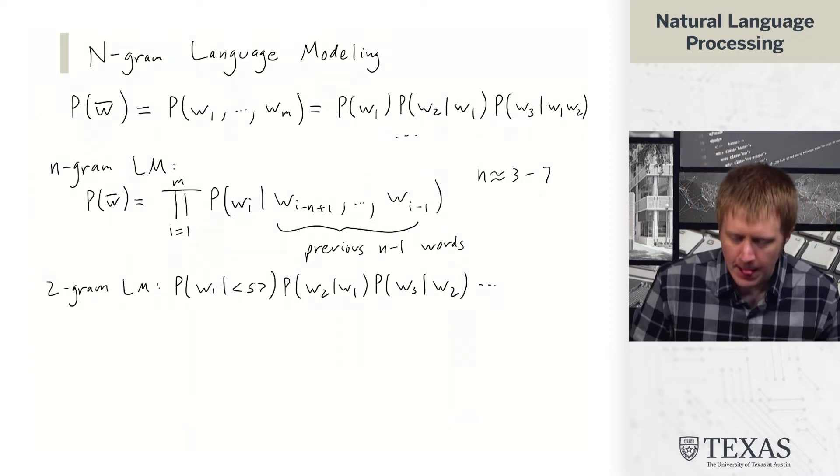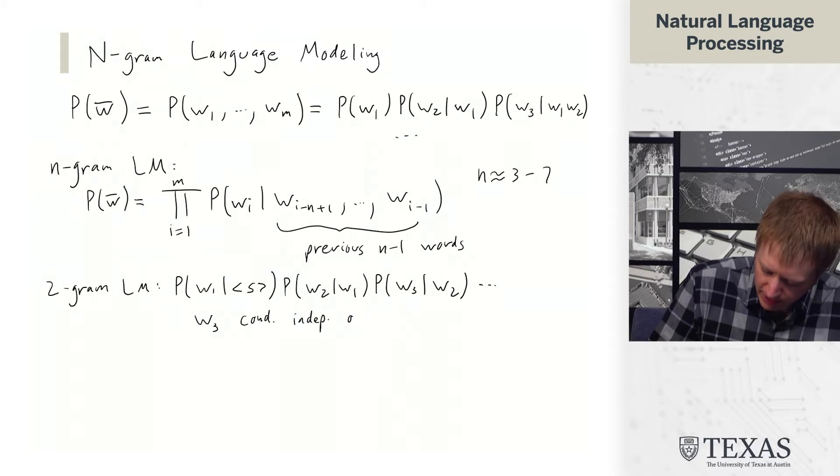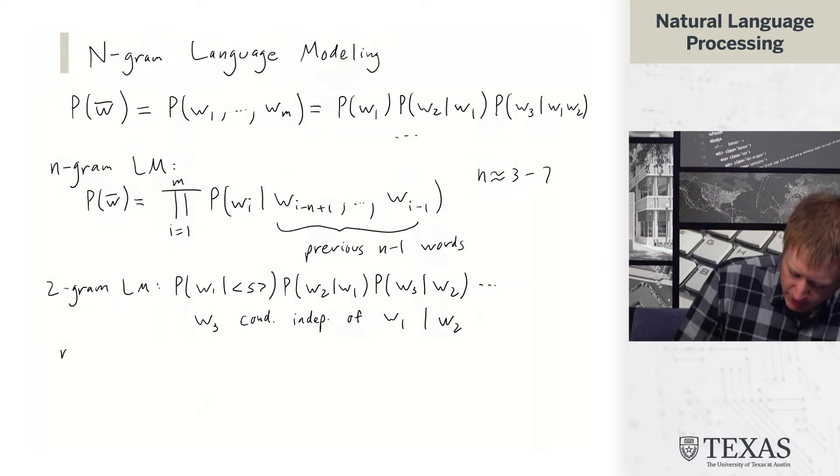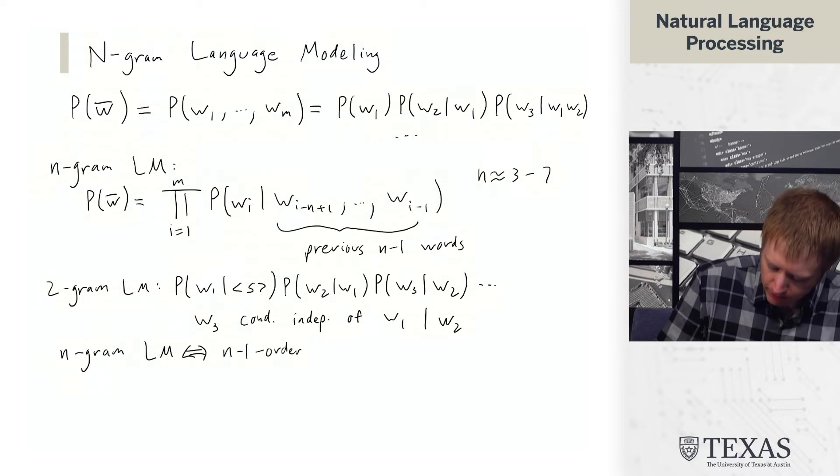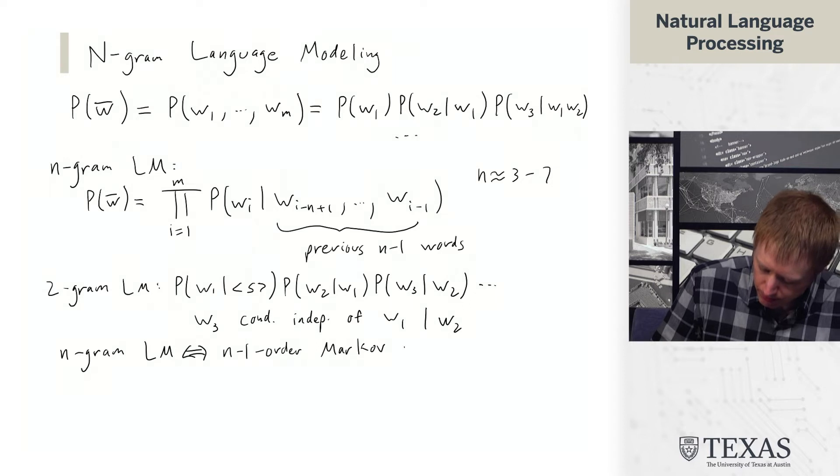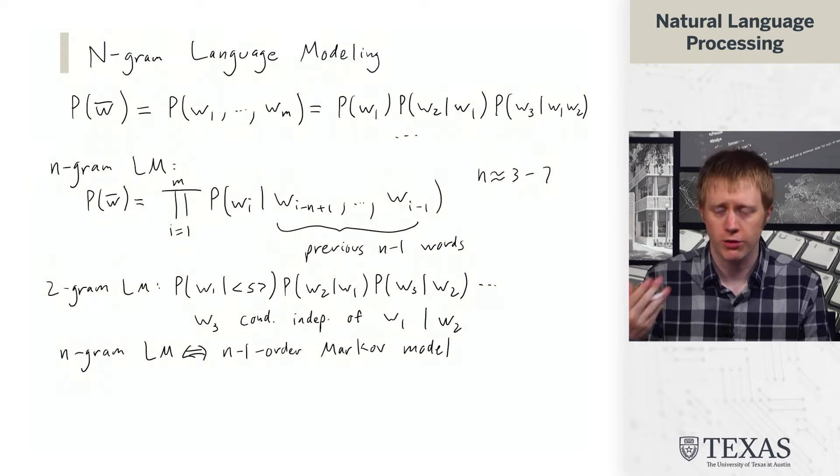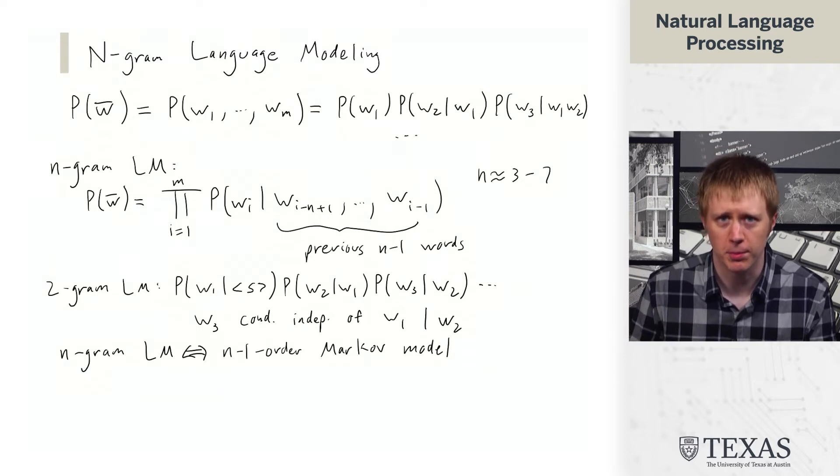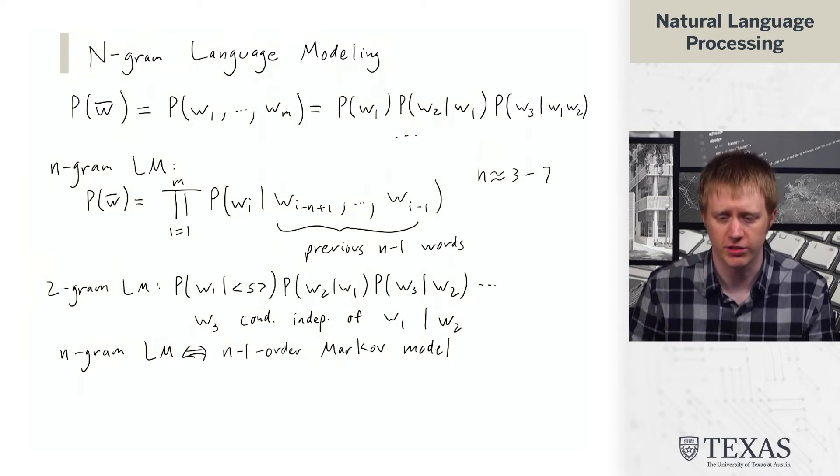So you notice that w3 is conditionally independent of w1 given w2. And so an n-gram LM basically corresponds to a n-1 order Markov model. And so in this case, for example, we recover our so-called first-order Markov model that we saw in HMMs per part of speech tagging. In that case, tag conditioned on the one before it, and here each word conditions on the one before that one.